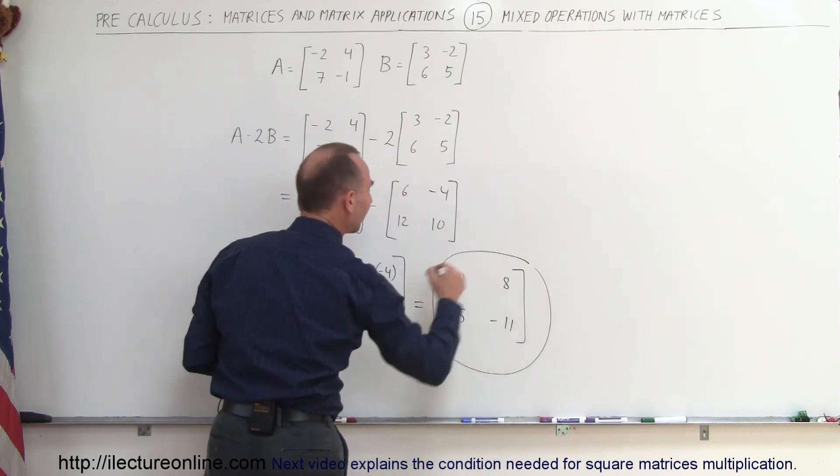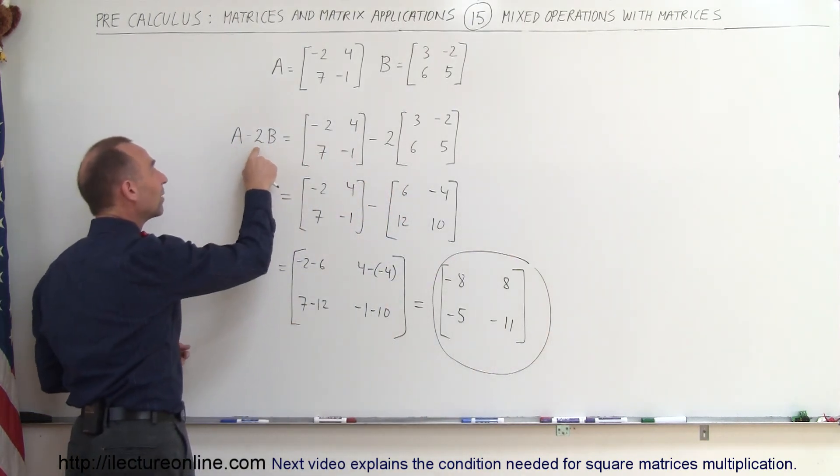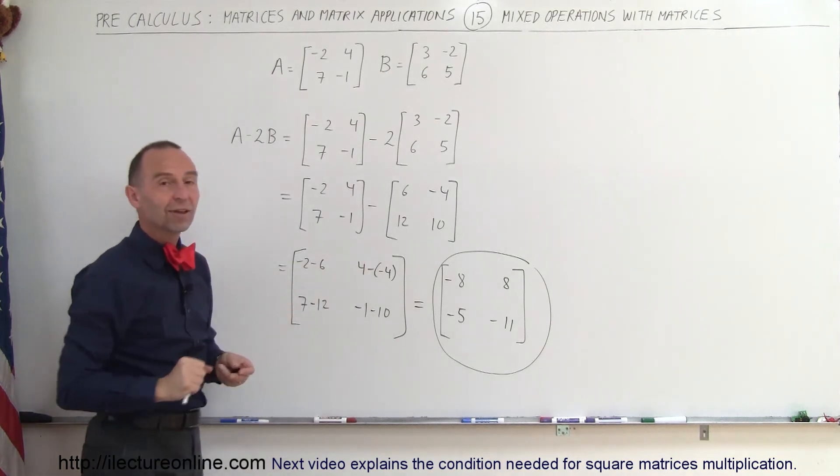And this then is the result of that mixed operation of the matrix A minus twice the matrix B, and that's how it's done.